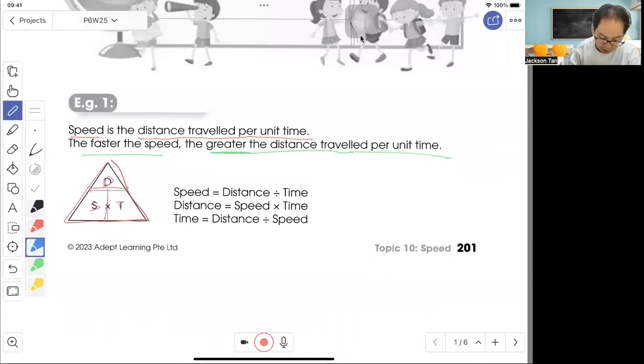So speed equals distance over time, means divided by time. Distance equals speed times time, and to find time, is distance divided by speed. So this is the formula.